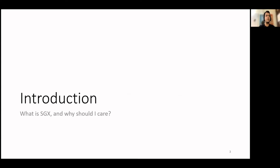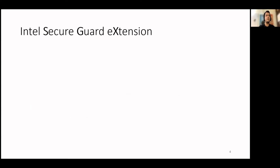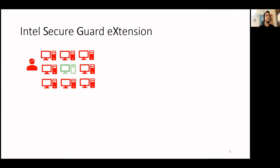Let us get started with the introduction. What is Intel Secure Guard Extension or SGX? Intel SGX is a trusted execution environment offering from Intel. Its main objective is to securely execute an application on a remote untrusted system. By security, we mean that the confidentiality and integrity of the code and the data are maintained. The security is guaranteed even in the presence of a malicious user with root-level access. SGX also guarantees security even if the operating system or the hypervisor is compromised.